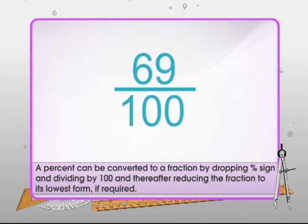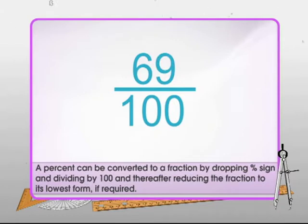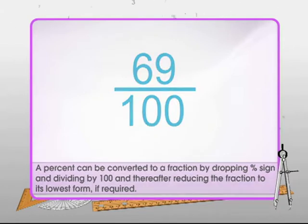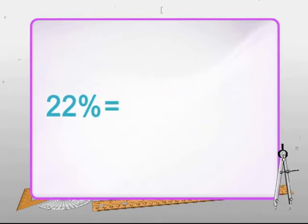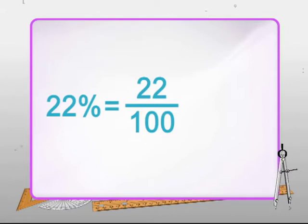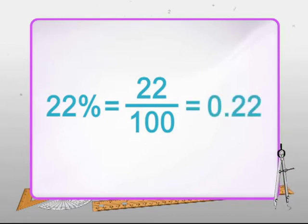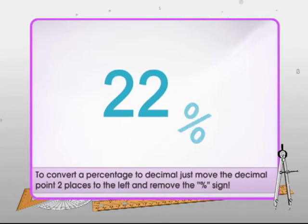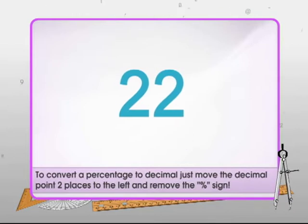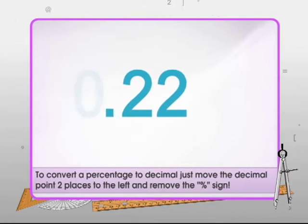A given percent can be converted to a fraction just by dropping the percent sign and dividing by 100. Similarly, we can convert percentage to decimal. For example, 22% = 22/100 = 0.22. Thus, a given percent can be converted into a decimal just by dropping the percent sign and moving the decimal point two places to the left.